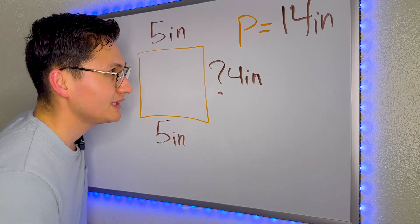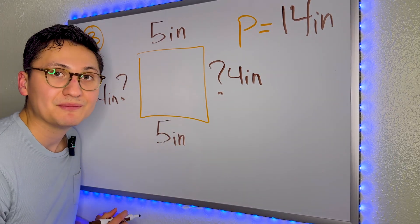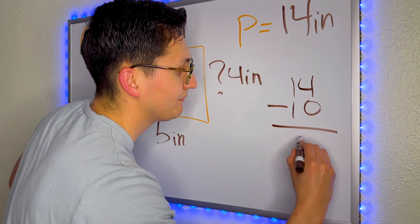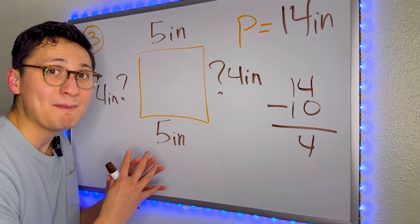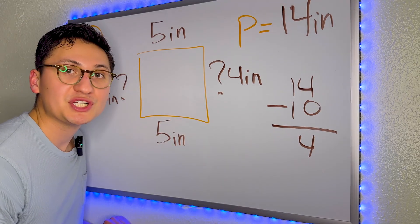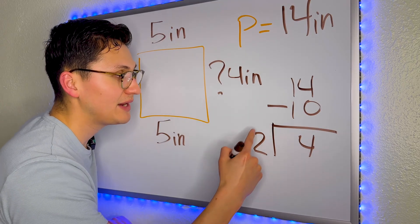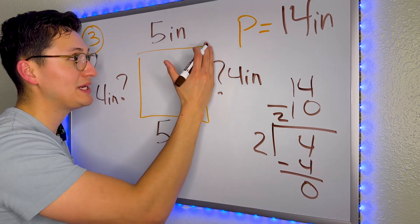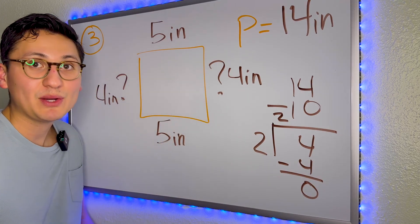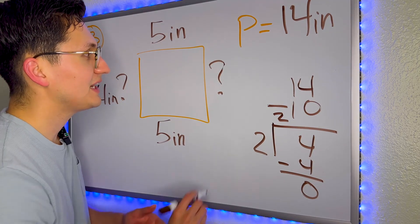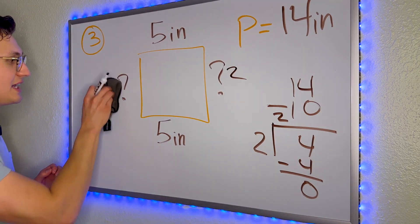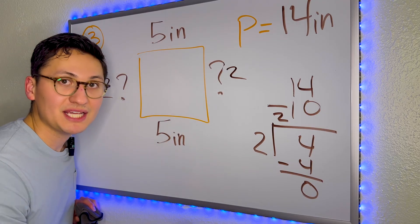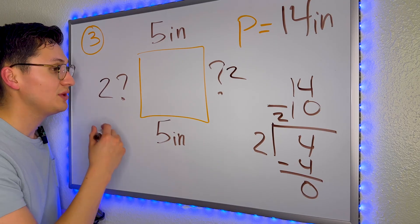So maybe instead of putting 4 on both sides, maybe we should have divided it by the two sides, right? Because 14 minus 10 is 4. But this 4 is the combination of two sides. So this 4 should have been divided by 2. 2 times what is going to give us 4? 2 times 2 is 4. So this 2 is the actual measurement of this side as well as this side. And the way that we can test it out is by adding. So if this side is 2 inches and this other side is 2 inches, well, it must give us 14 if it is the right answer. So 5 plus 5 is 10, plus 2 is 12, plus 2 is 14.